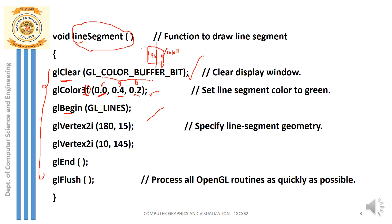glBegin is a function used to start the list of vertices. To draw a line, you require two vertices — the two endpoints, vertex 1 and vertex 2. A minimum of two vertices is required to draw a single line. The symbolic constant you must pass is GL_LINES — this cannot be changed. GL_LINES indicates that the primitive you are going to draw is a line, and you must then pass the two vertices.